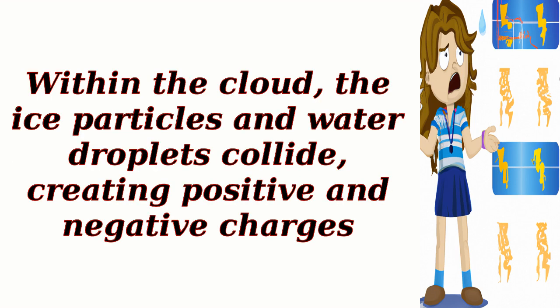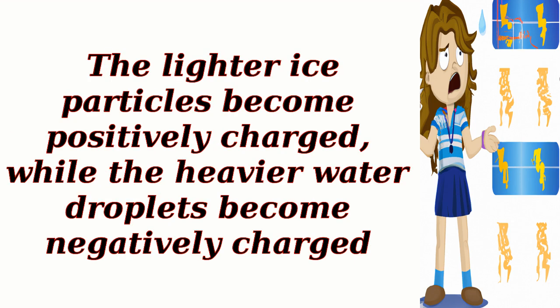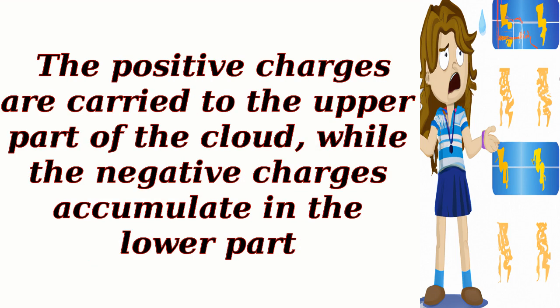Within the cloud, the ice particles and water droplets collide, creating positive and negative charges. The lighter ice particles become positively charged, while the heavier water droplets become negatively charged. The positive charges are carried to the upper part of the cloud, while the negative charges accumulate in the lower part.